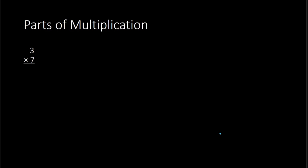To begin, we have different parts of a multiplication problem. For example, if you had 3 times 7, we know the answer would be 21. The numbers that we are multiplying together, so the 3 and the 7, those are called factors. And then the answer of a multiplication problem is called the product. So make sure you know these terms, because you will see these a lot in your study of mathematics.